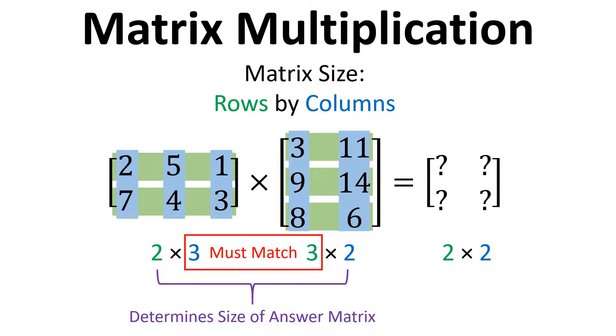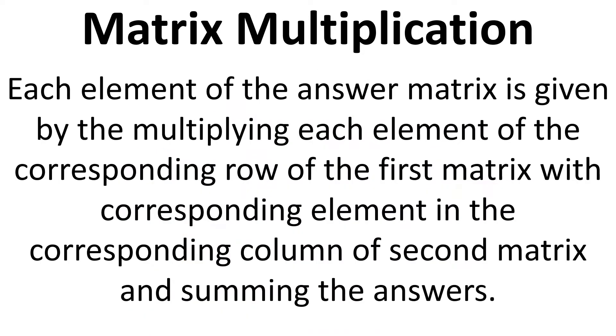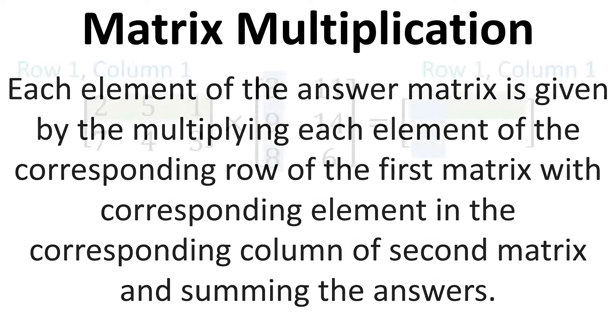And we're going to take a look in a bit more detail how we calculate the elements for this answer matrix. So we can see that's got two columns, two rows. Now in order to multiply them, each element of the answer matrix is given by multiplying each element of the corresponding row of the first matrix with the corresponding element in the corresponding column of the second matrix and summing the answers. That's a big horrible mouthful and doesn't really help us very much. So let's look at an example just to see how this works.